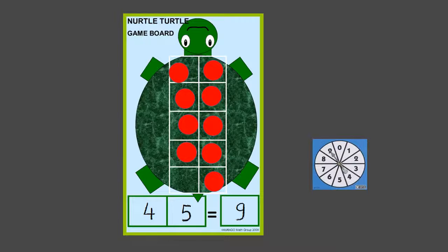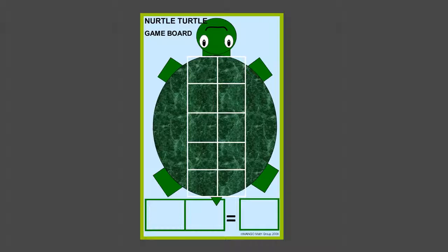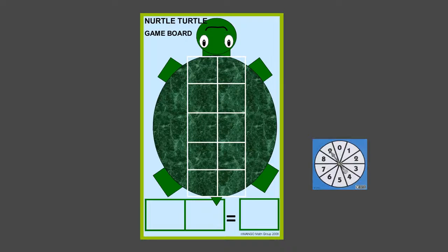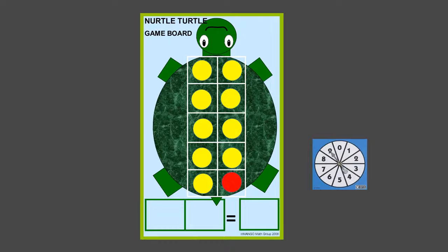Once they've done that a few times, you can do a different variation which is using it as a ten-frame board. You spin your spinner and you get nine, and you place nine counters of one color on the board, and then that extra space is another color.